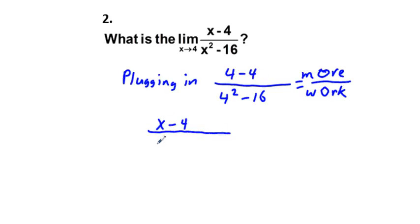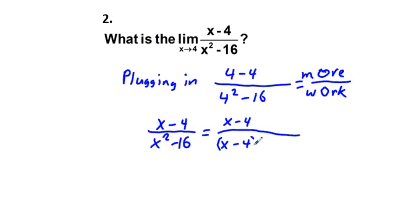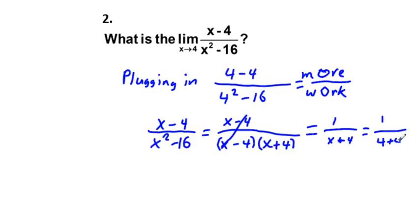We factor the denominator using difference of squares: x squared minus 16 equals (x minus 4)(x plus 4). So we have (x minus 4) over (x minus 4)(x plus 4). The (x minus 4) terms cancel, leaving one over (x plus 4). Plugging in x equals 4 gives one over (4 plus 4), which equals one-eighth. That is our limit.